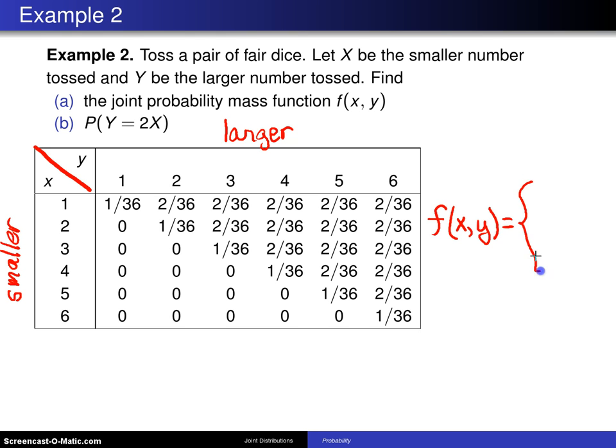and then break it out into the two cases where you have 1/36 on the diagonal and 2/36 above the diagonal. But we won't write it out that way because everything we need is right here. So that is part A, that's given in the table here.